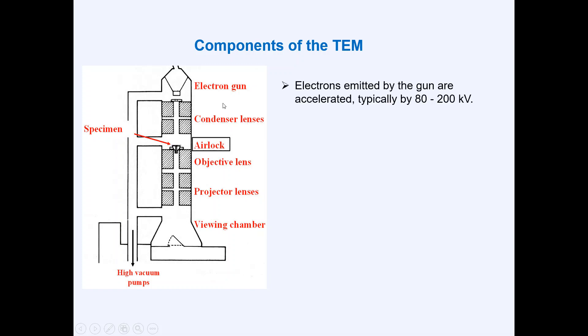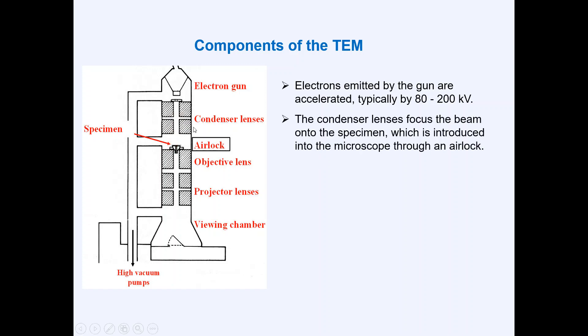Looking at the figure showing different parts of the transmission electron microscope: the topmost section consists of the electron gun, which emits electrons. Emission is achieved by applying a high voltage to the electron gun, which is normally made of tungsten or lanthanum hexaboride crystal. After emission, the electrons are accelerated toward the specimen using a high voltage that ranges from 80 to 200 kiloelectron volts.